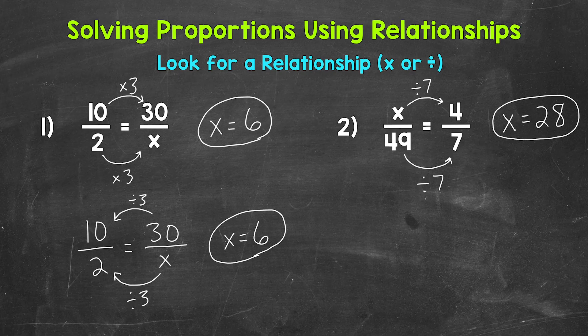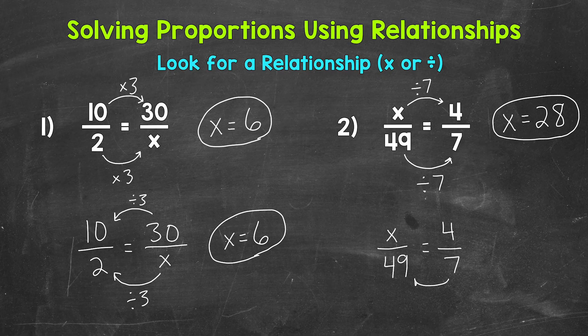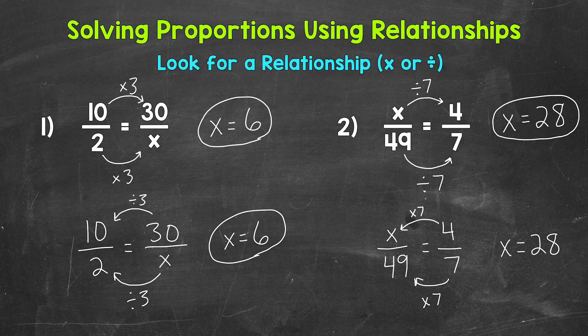Now we can also go the other way and use multiplication. Let's take a look at what that will look like. So x/49 = 4/7. Well, we know 7 times 7 equals 49. So let's use that information to figure out x. Well, 4 times 7 equals 28. So we get 28 that way as well.